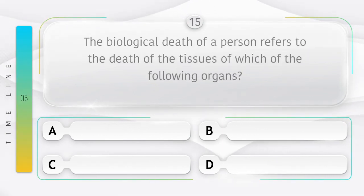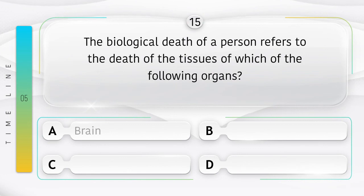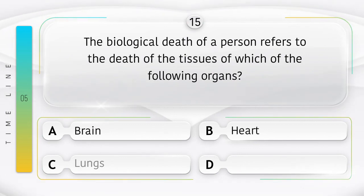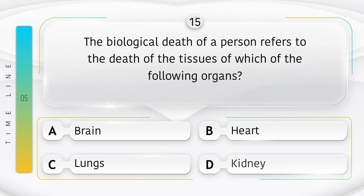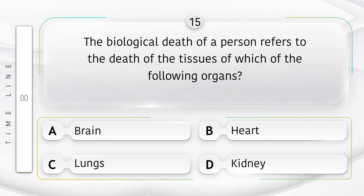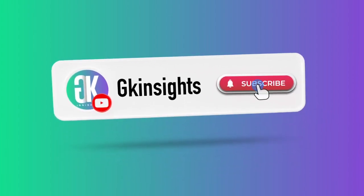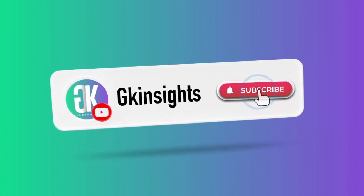The biological death of a person refers to the death of the tissues of which of the following organs? Option A: brain, B: heart, C: lungs, D: kidney. Answer is option A: brain.